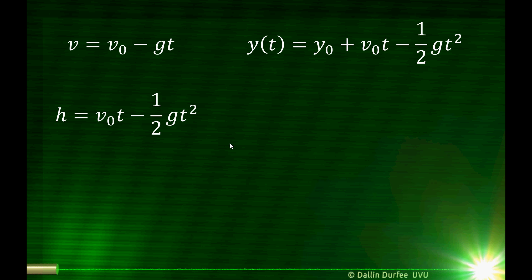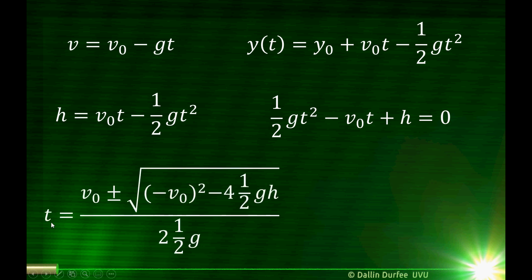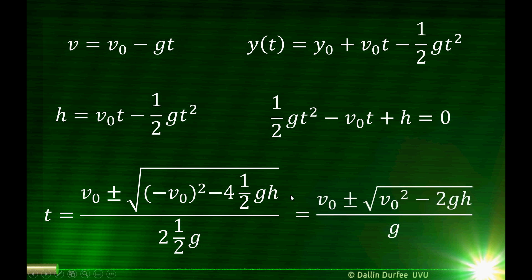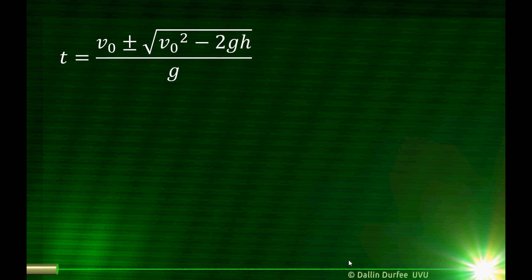If I let the position where they leave my hand be 0 and h is 2 meters, I want to know when the position is h. So h equals v0 t minus one-half gt squared. I want to solve this for the time at which the keys have gone up by 2 meters. Factoring out a t doesn't help because I don't have zero on the other side — I have h. Moving everything to one side gives a quadratic equation, which I can solve using the quadratic formula: t equals negative b plus or minus the square root of b squared minus 4ac, all divided by 2a.